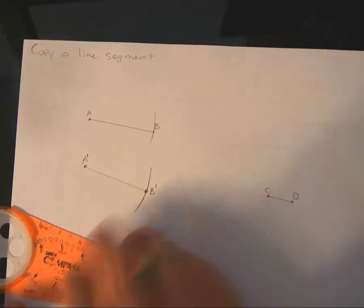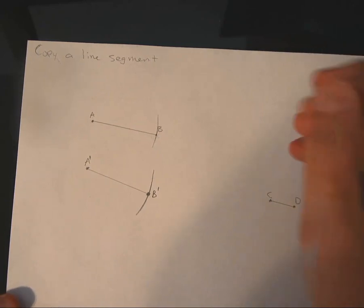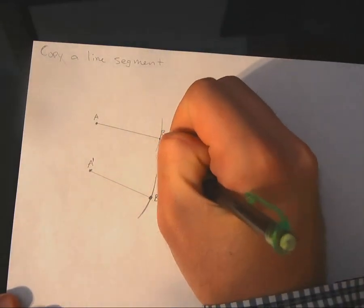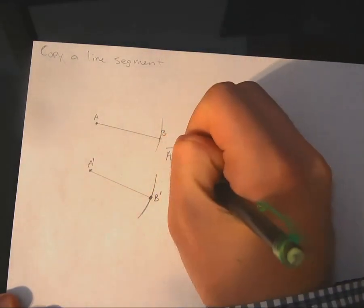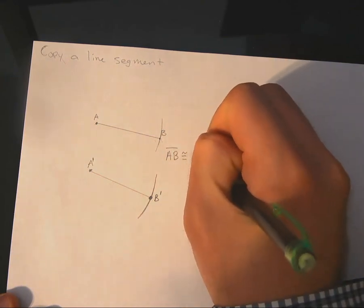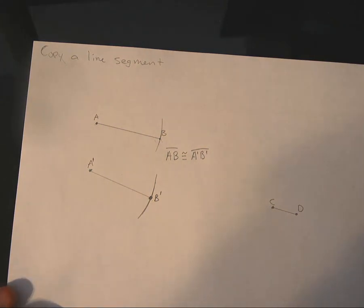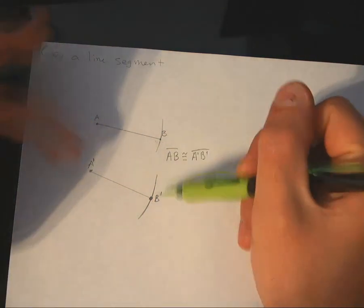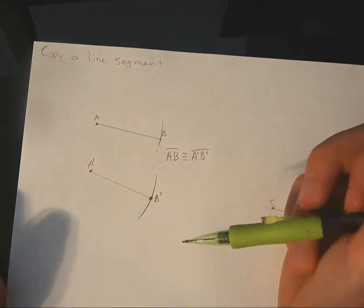What we have now—you need to write down this notation, we need to get used to it—is that the line segment AB is congruent to line segment A prime B prime. That's how we draw or copy a line segment using just a compass.